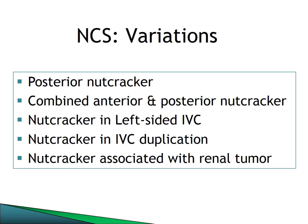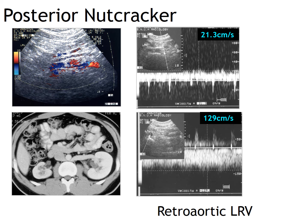The last part of this talk covers variations of nutcracker syndrome: posterior nutcracker, combined anterior and posterior nutcracker, nutcracker in left-sided IVC, nutcracker in IVC duplication, and nutcracker associated with renal tumor. Here is a case of posterior nutcracker syndrome with a retro-aortic left renal vein compressed between the aorta and vertebral body, with a flow velocity of 129 cm/sec.